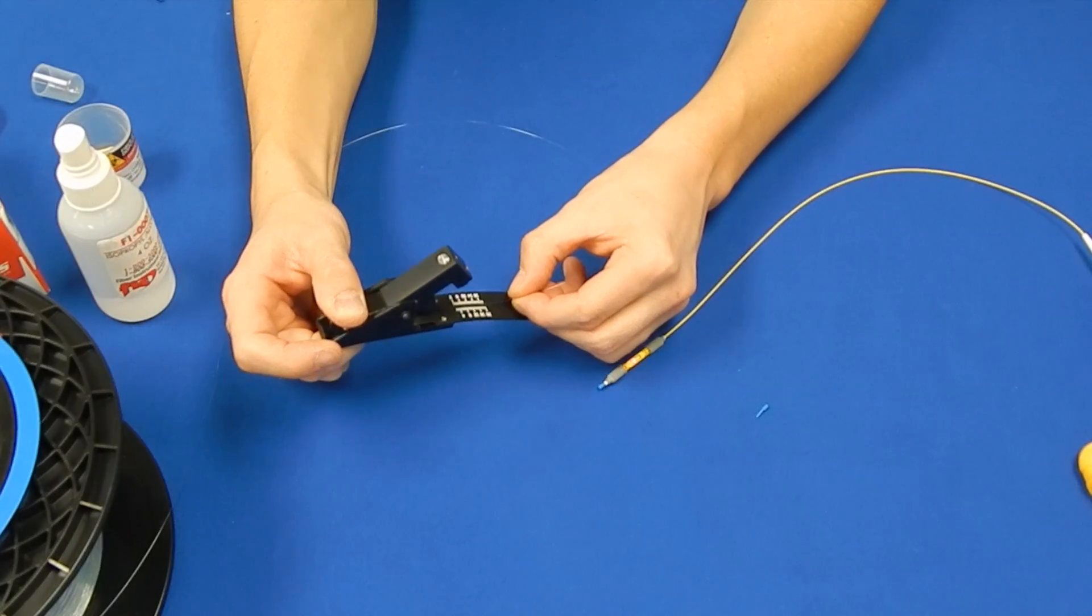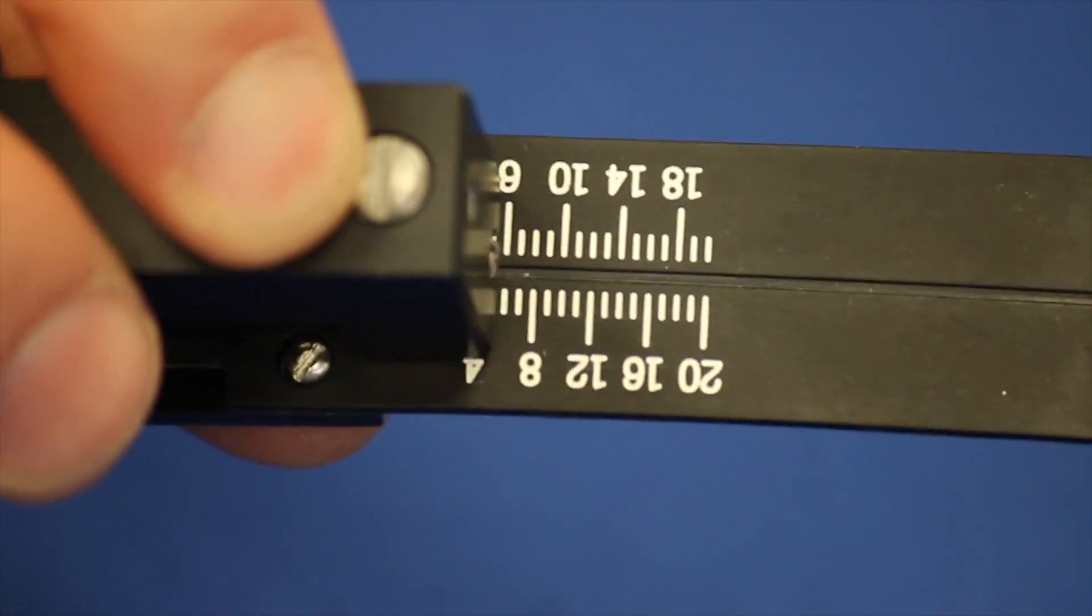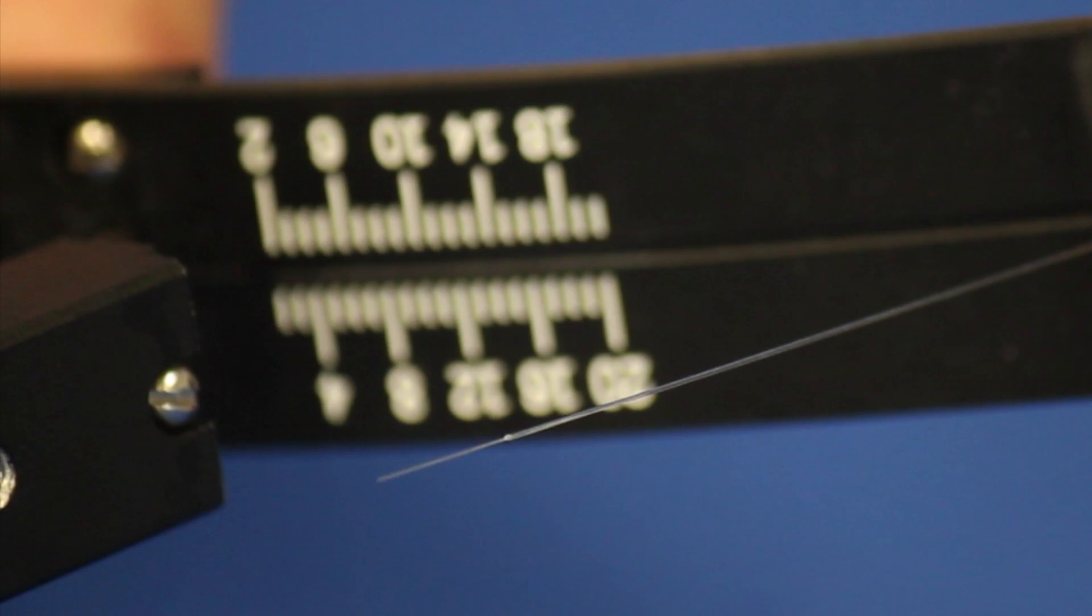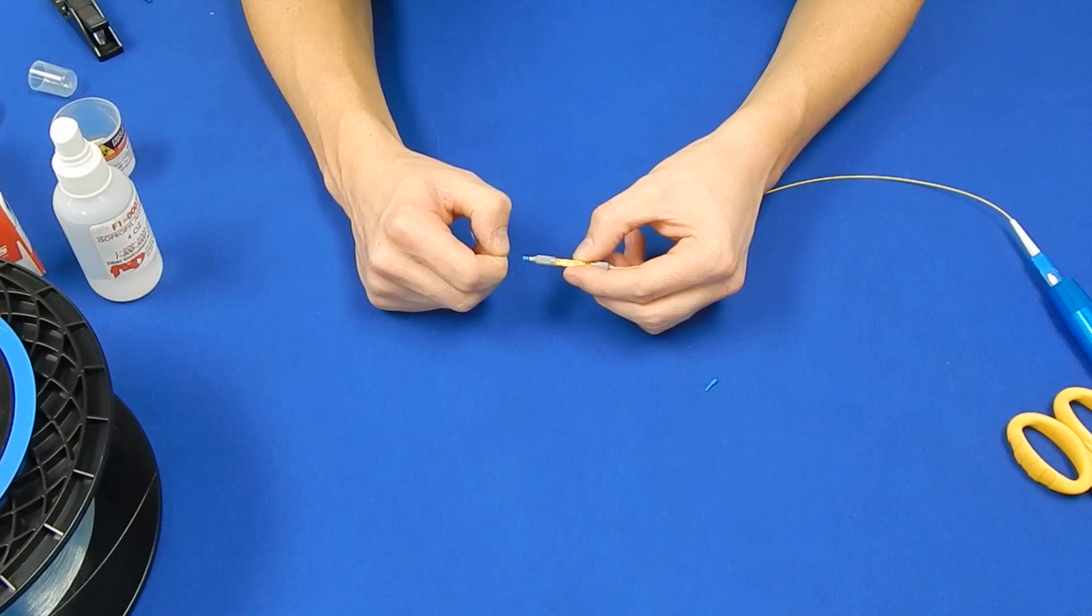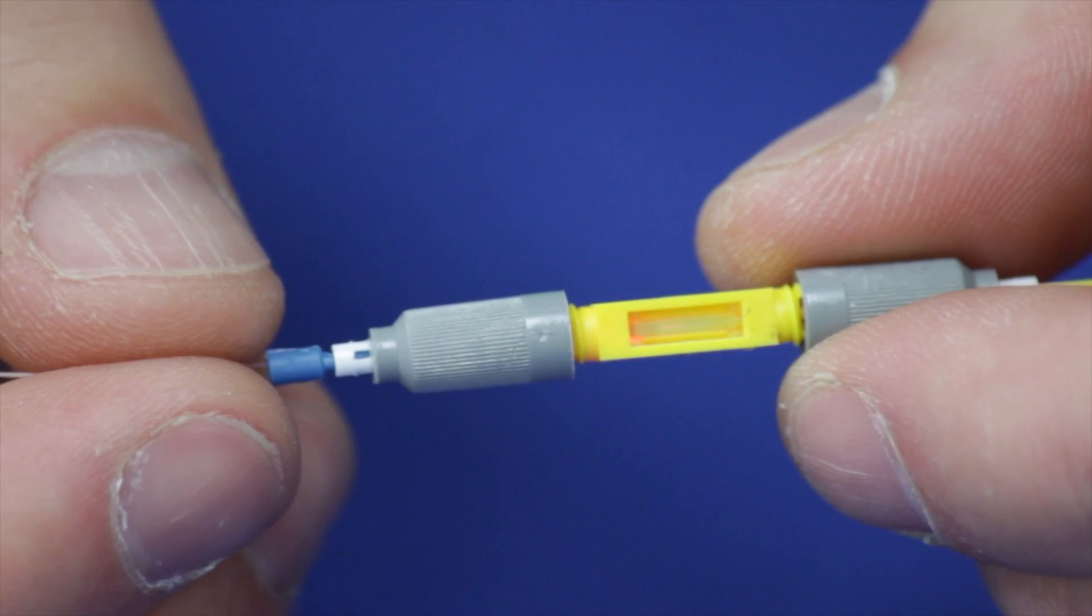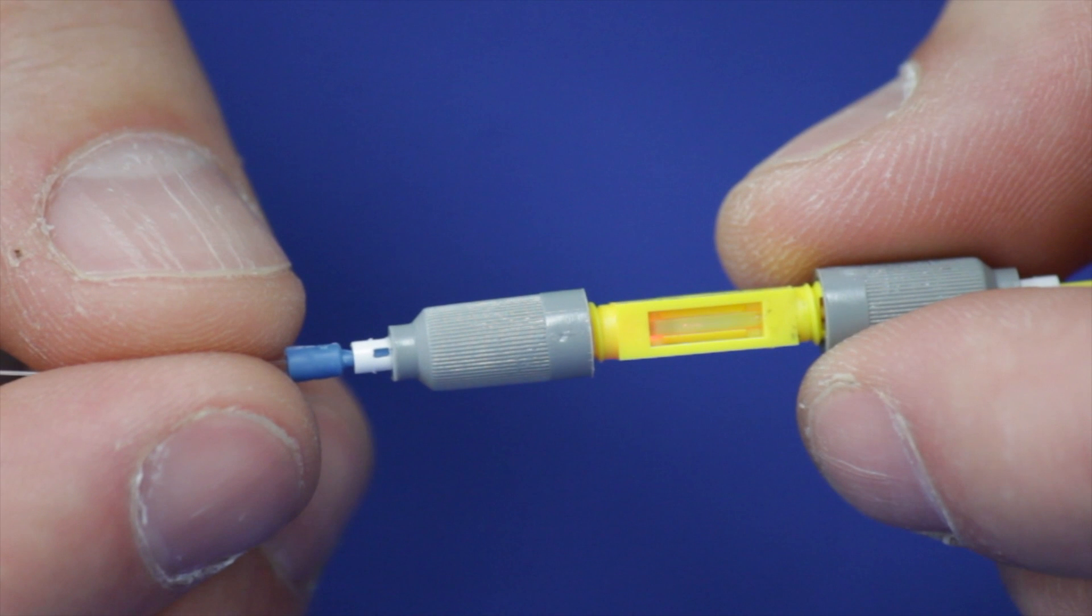Cleave the fiber to 7mm. Keeping the blue plug in the UltraSplice, insert the bare fiber as shown. The connection will be optimized when the red light diminishes.